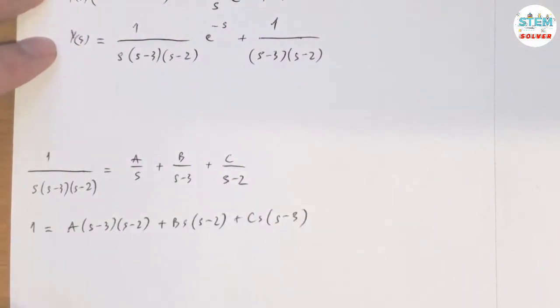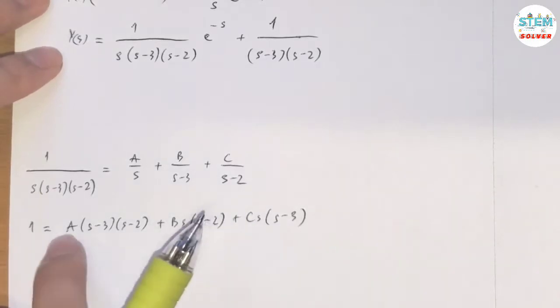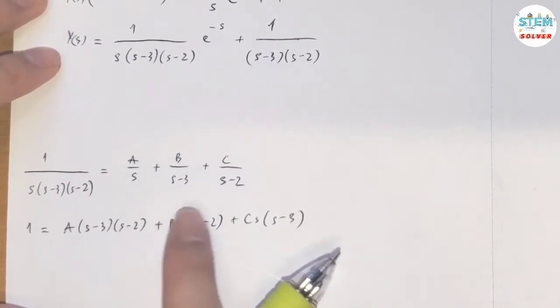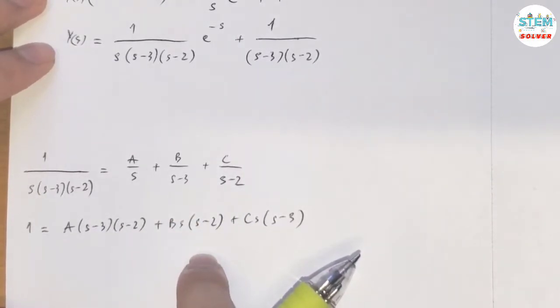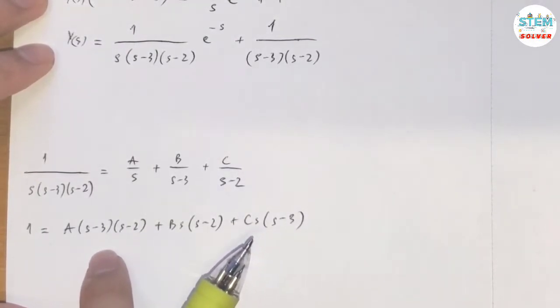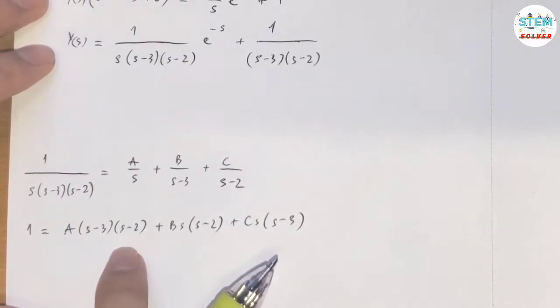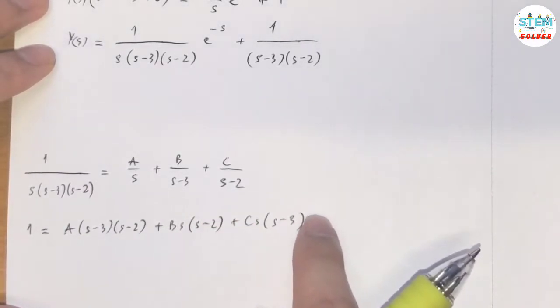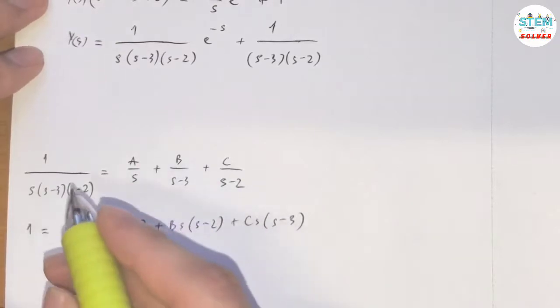Some of you might multiply this out and then solve for it. Well, I wouldn't do that. What I'm going to do is take the limits, because if I can eliminate this and this, either one of these, I can get the value of the other one right away. So let me show you what I mean by that.